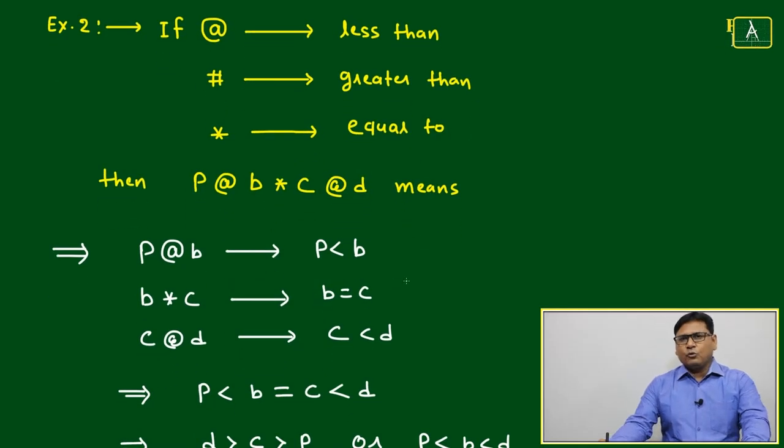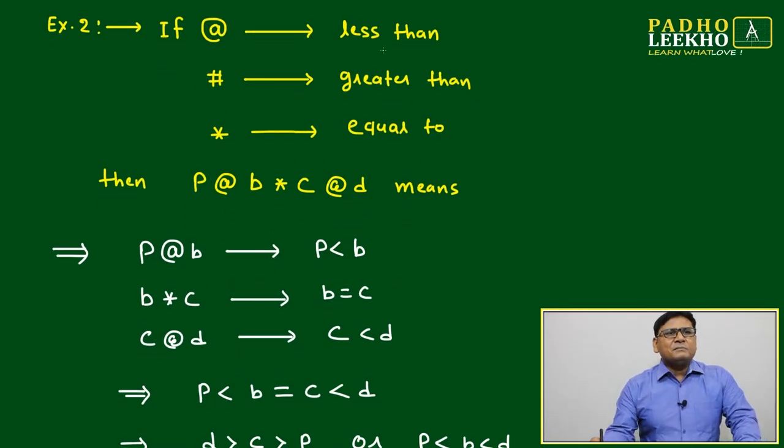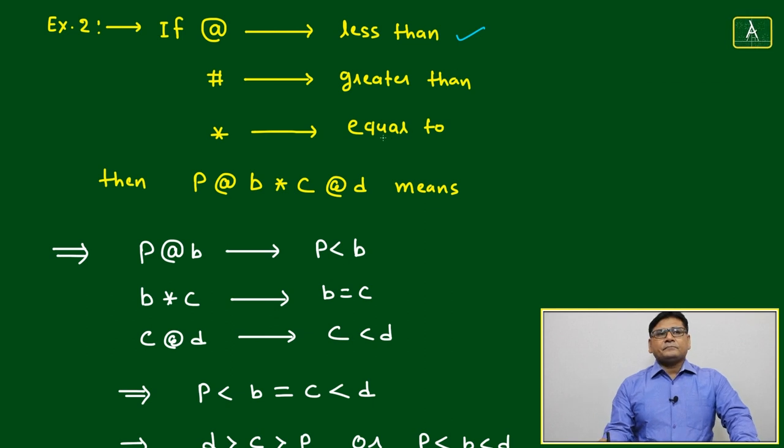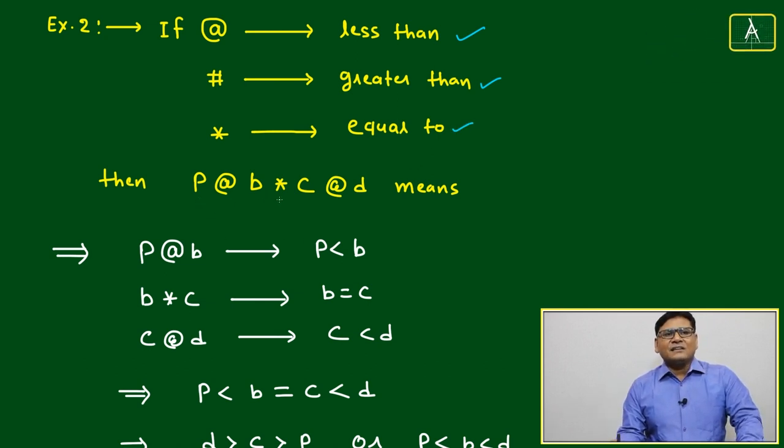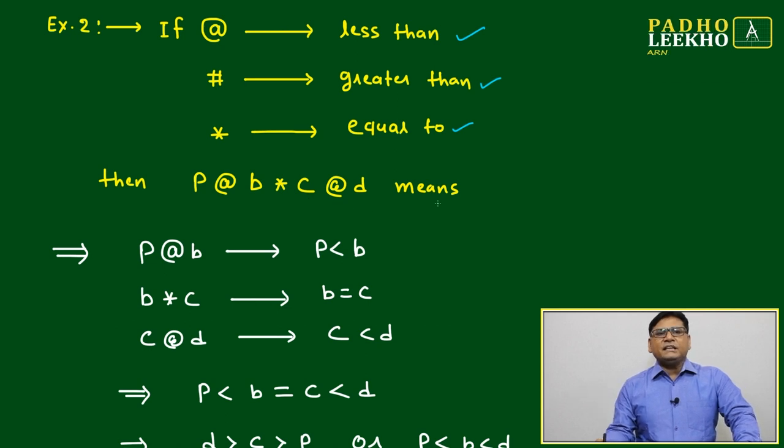Next question to get more clarity: if @ represents less than, # is represented as greater than, and * is representing equal to, then P @ B * C @ D means what? This group of notation or symbols will represent what?